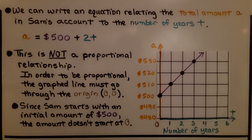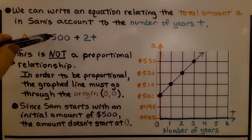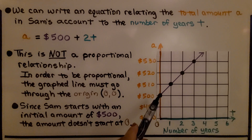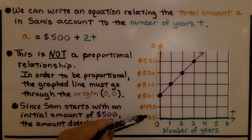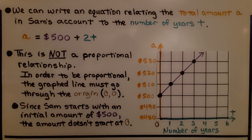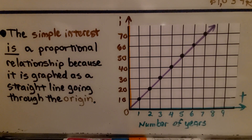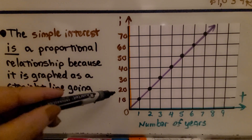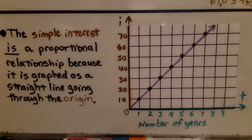We can write an equation relating the total amount A in Sam's account to the number of years t: A equals $500 plus 2t. This is not a proportional relationship — in order to be proportional, the graphed line must go through the origin at (0, 0). Since Sam starts with an initial $500, the amount doesn't start at zero. The simple interest itself is a proportional relationship because it graphs as a straight line through the origin, but the total account balance is not.